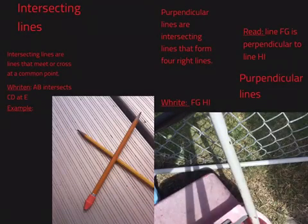Intersecting lines are lines that meet or cross at a common point. Perpendicular lines are intersecting lines that form four right angles.